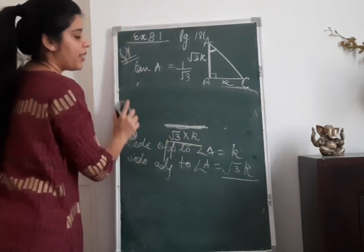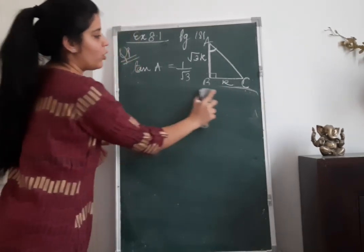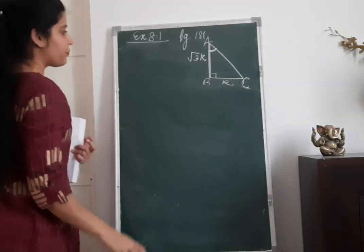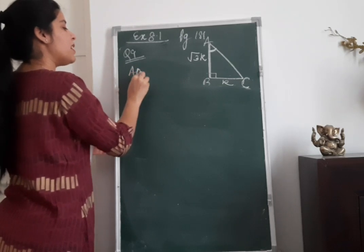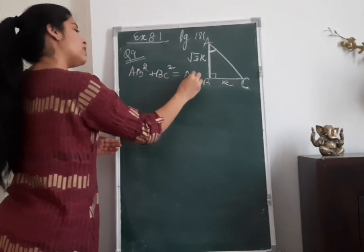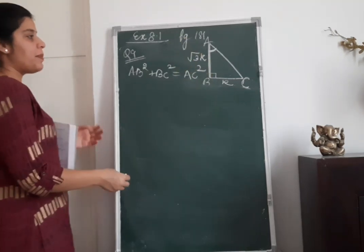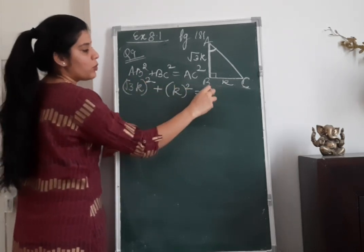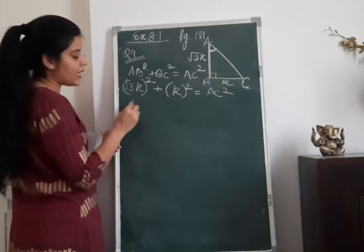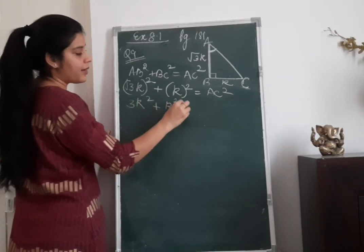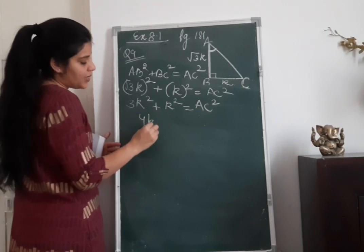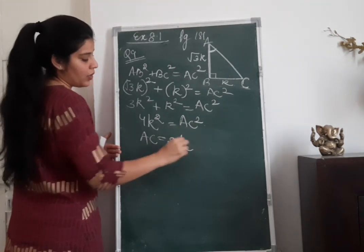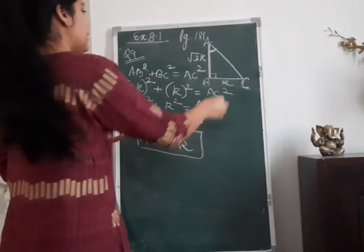Now let us use Pythagoras theorem, because we need to find the value of sin A, cos C, cos A, and sin C. AB square plus BC square is equal to AC square. So root 3K whole square plus K whole square equals AC square. That gives 3K squared plus K squared equals 4K squared equals AC squared. Taking square root on both sides, AC equals 2K.